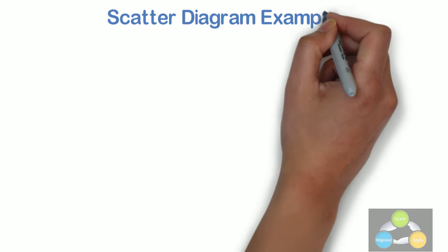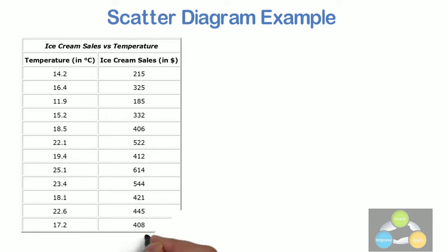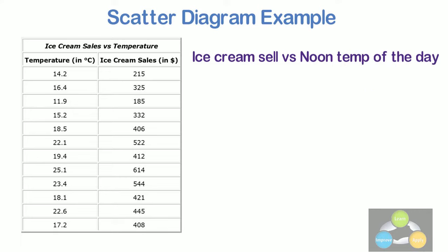Scatter diagram example. Let's see a simple example of ice cream shop. The local ice cream shop keeps track of how much ice cream they sell versus the noon temperature of that day. Here are their figures for the last 12 days.